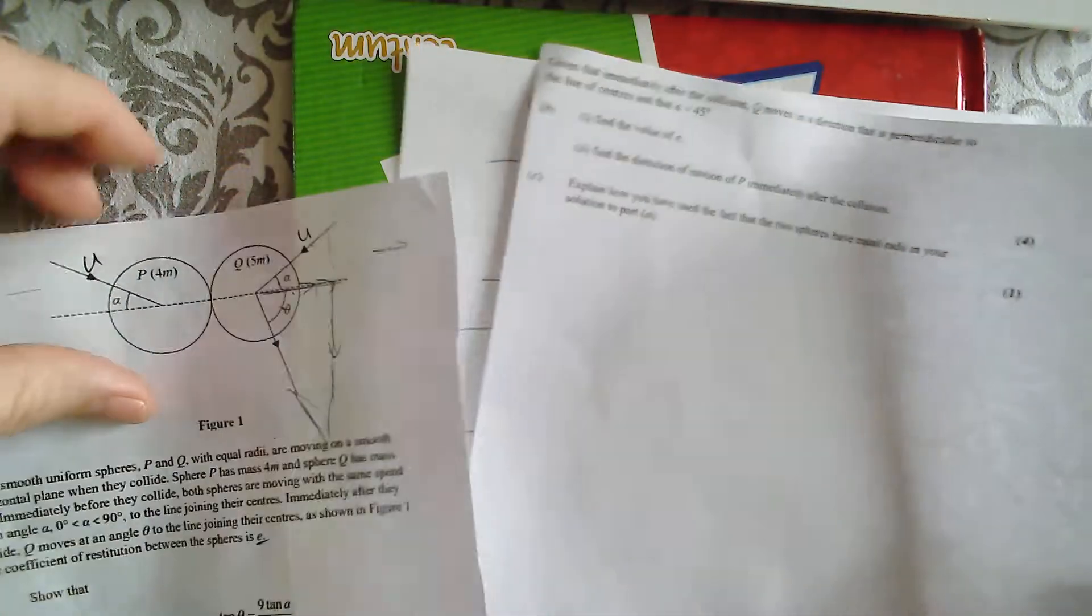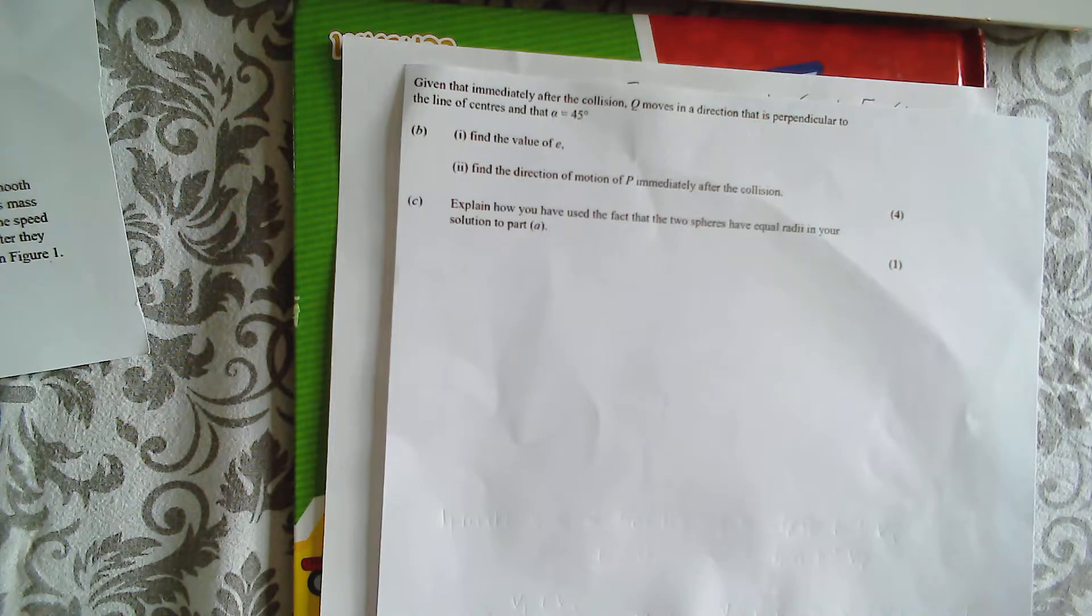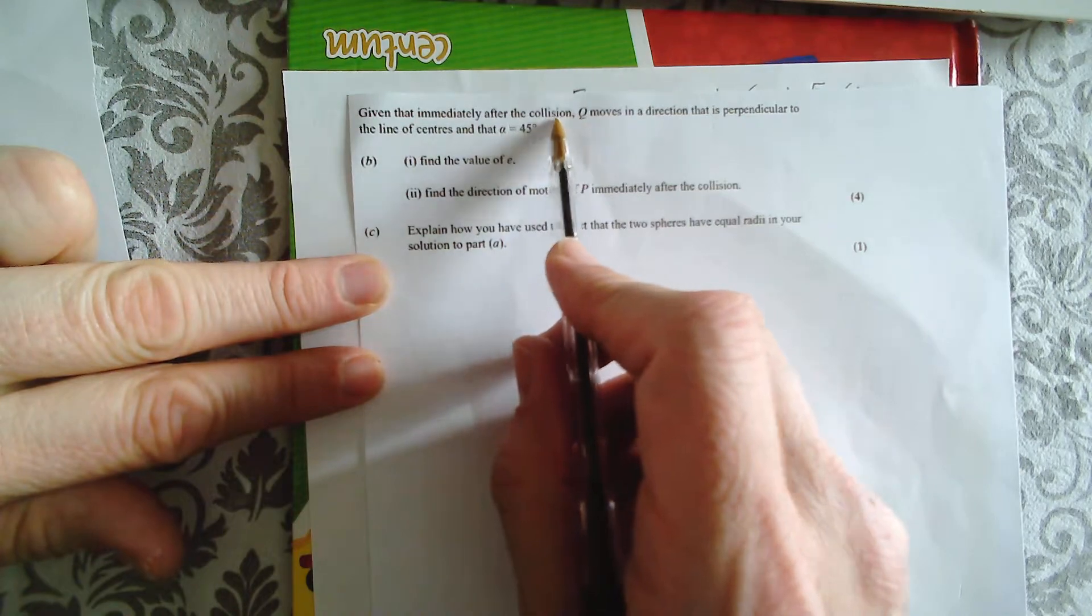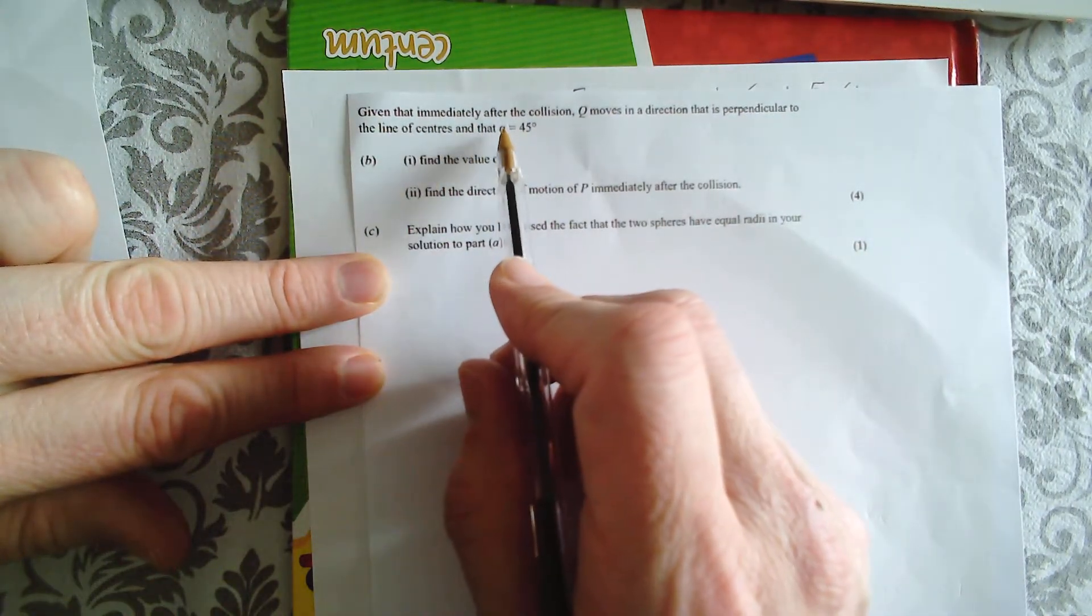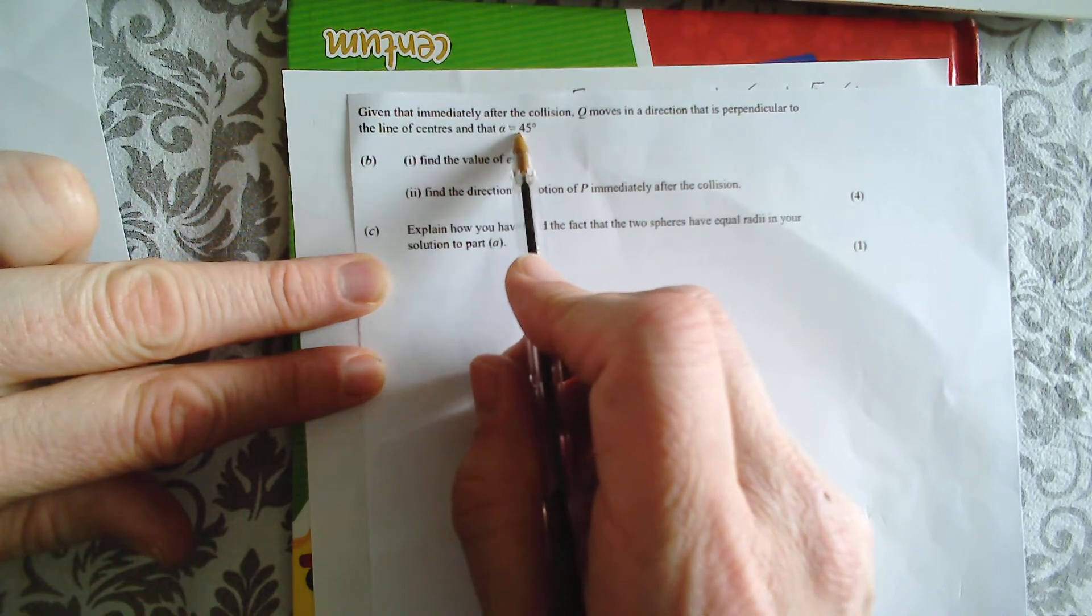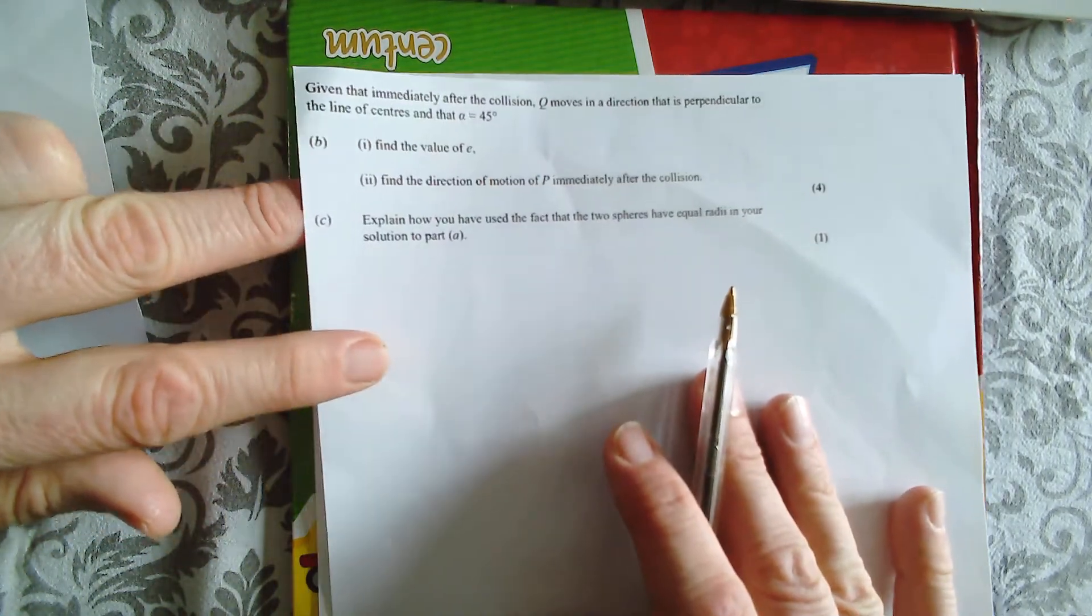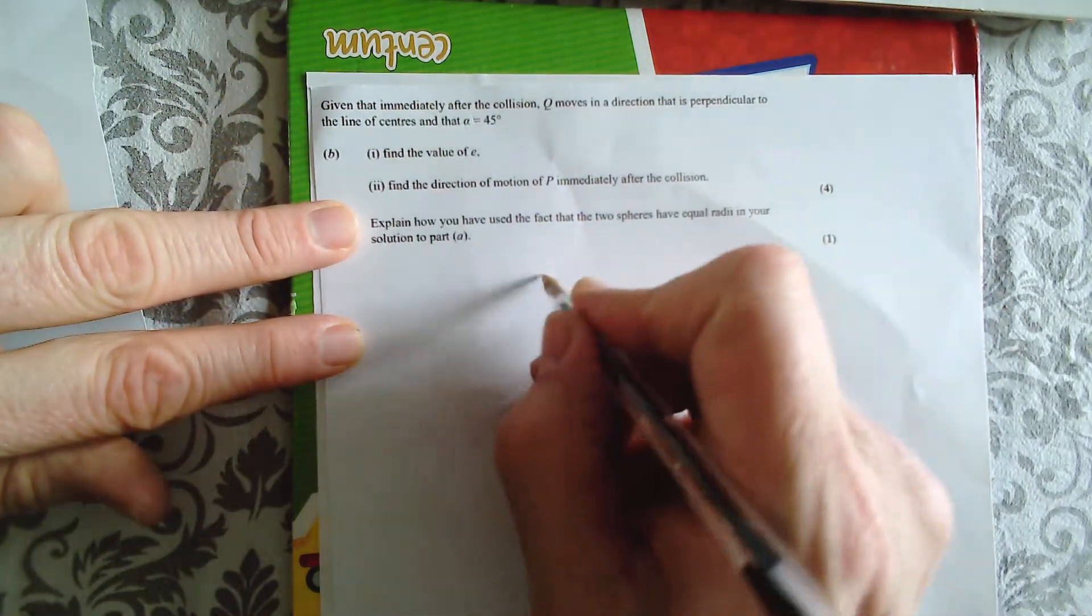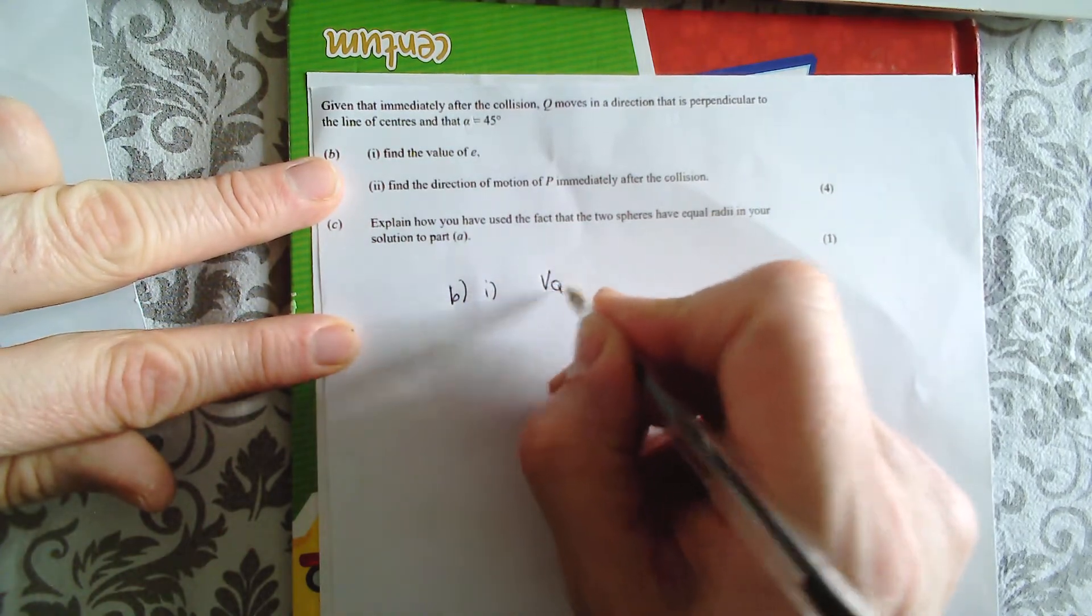I do have another question to follow this up. You've probably run out of steam now, but do stay with this if you can. Now, we have some new information. Given that immediately after the collision, Q moves in a direction that's perpendicular to the line of centres. Well, what would that mean? If it moves perpendicular to the line of centres, it would mean that VQ is 0.